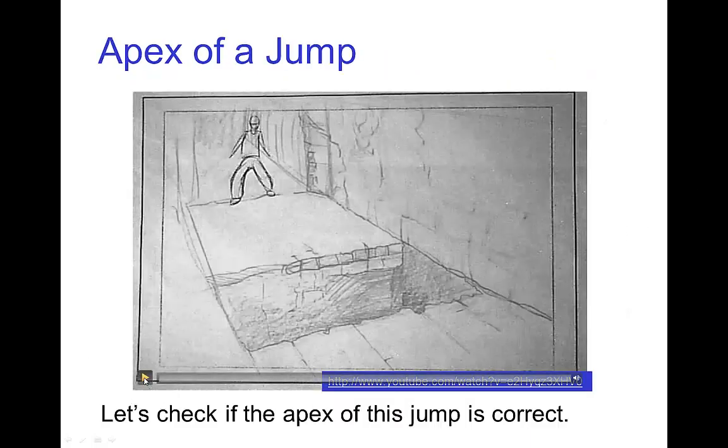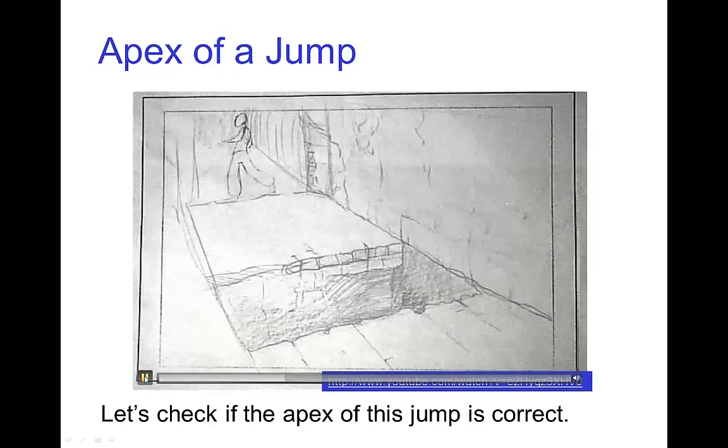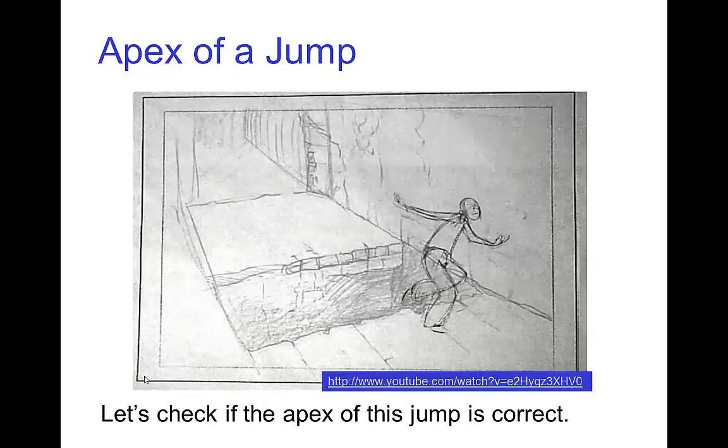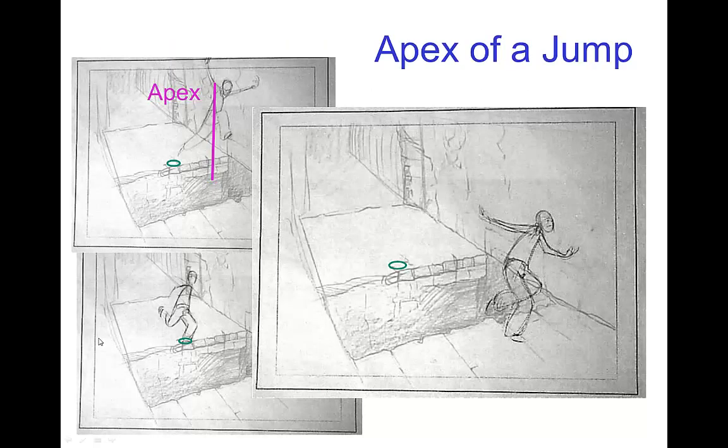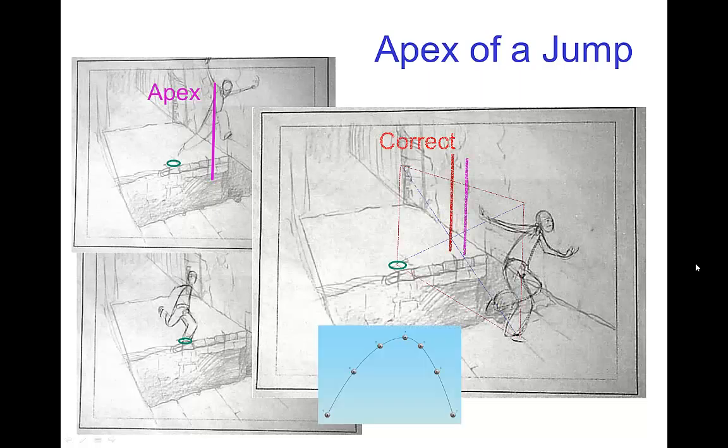Here's another example from a simple pencil test. So we see the character runs up, jumps, and lands. So we can check here's where the frame where the character jumps. This is the apex located here, and then the character lands.